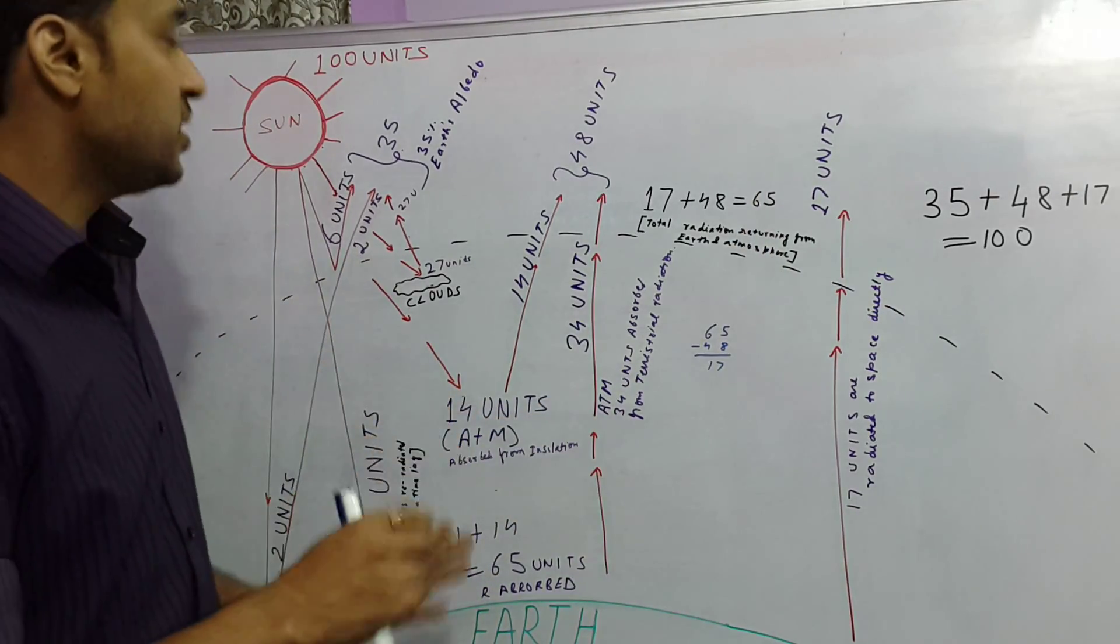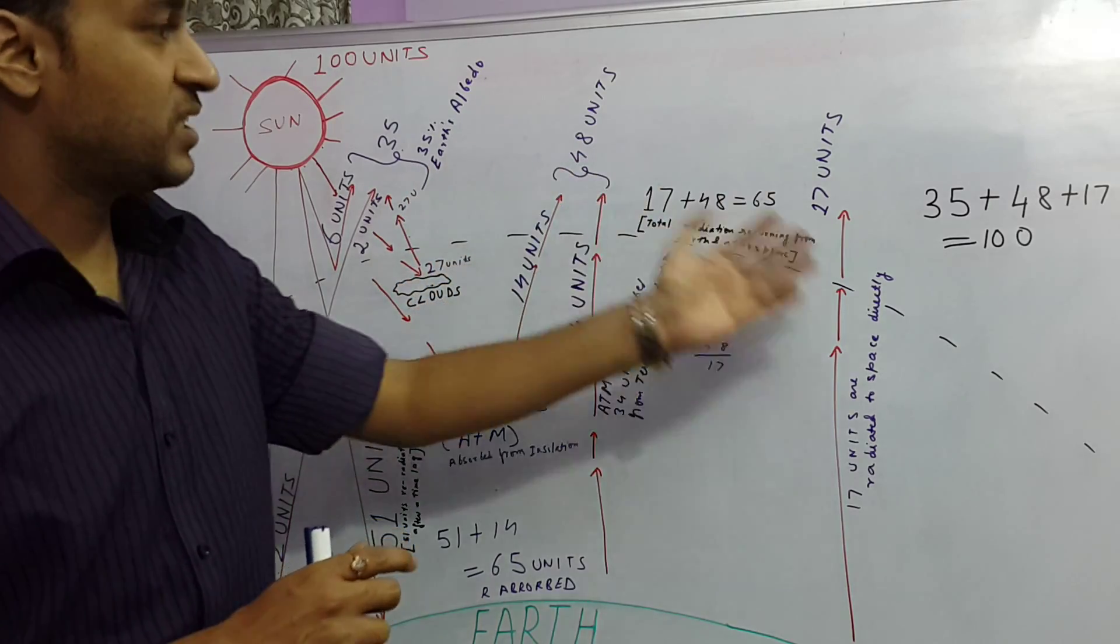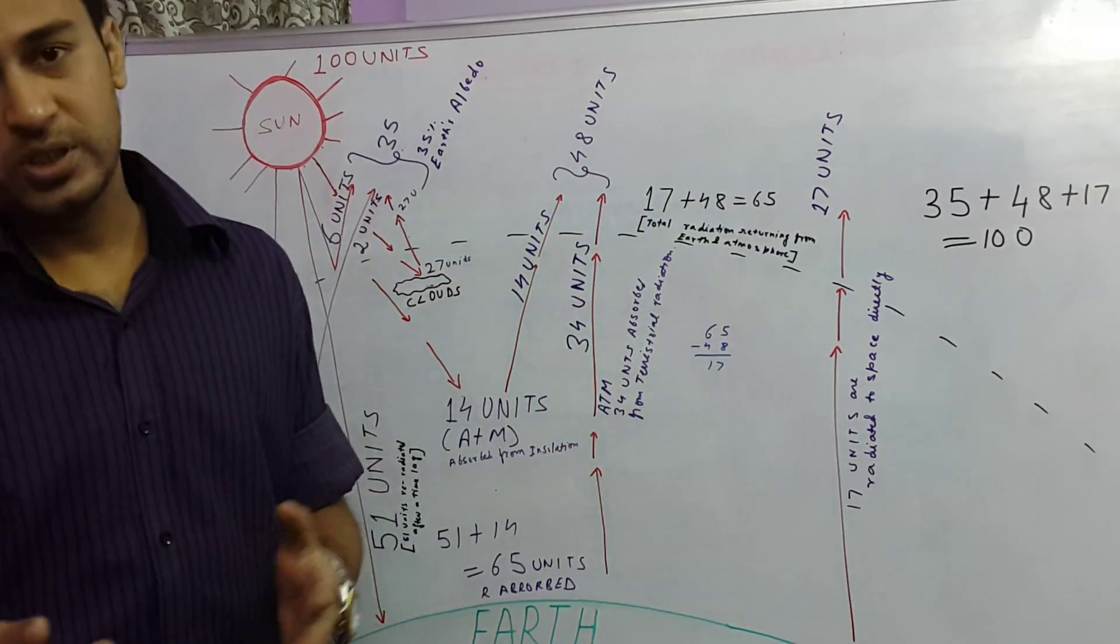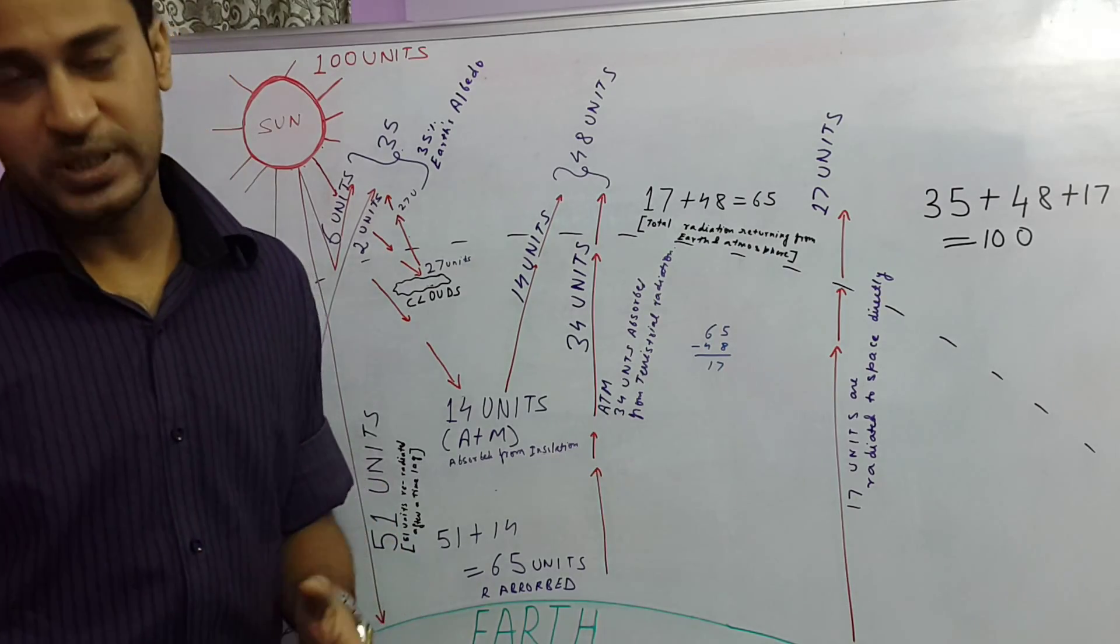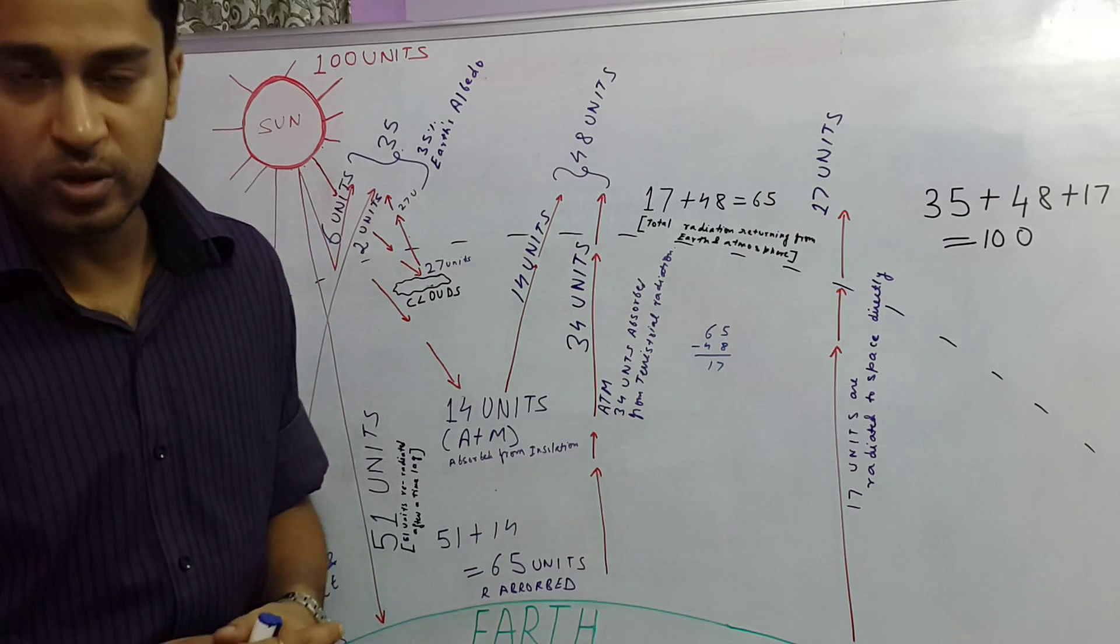So now if we calculate it, it would be 35 plus 48 plus 17 and this would be 100. So this is how the earth's temperature is maintained and this is called the heat budget or the heat balance of the earth.